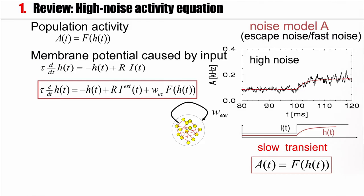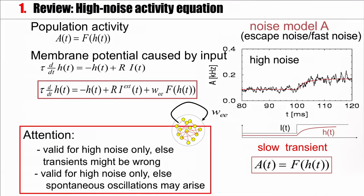This kind of model is the model we are going to use this week and we should remember that this is a model that's valid only in a certain limit. It neglects fast transient oscillations. It will always show slow transients. In fact it's valid for a model with high noise, escape noise, also called a fast noise model. So even though we know it has limitations, it's valid for high noise only.